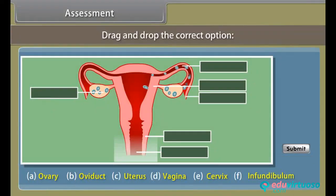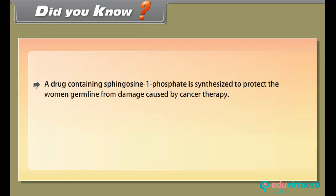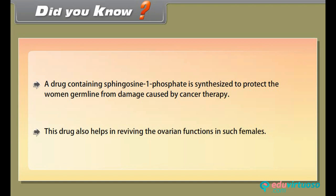Before proceeding further, let us know how much you have learned. Did you know? A drug containing sphingosine 1-phosphate is synthesized to protect the female germline from damage caused by cancer therapy. This drug also helps in reviving ovarian functions in such females.